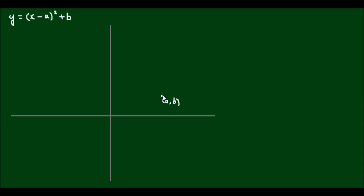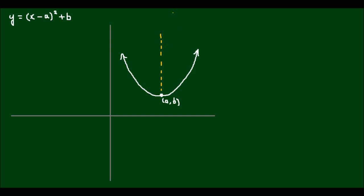From there I just try and use my best artistic skills to construct this parabola. The vertex of our parabola is at point (a, b), and note that this curve should be symmetrical about the line x is equal to a.